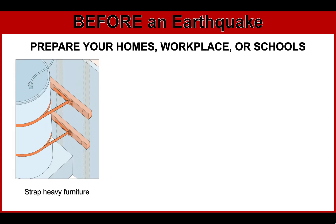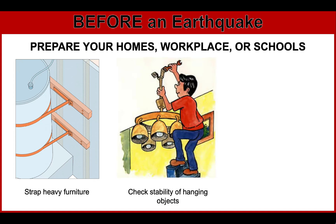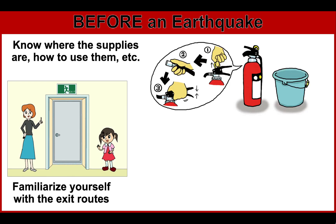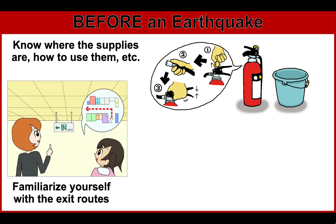Next, you have to prepare your homes, workplace, or schools. Strap or bolt heavy furniture and cabinets to the walls, and check the stability of hanging objects — make sure ceiling fans and chandeliers will not fall. Breakable items, harmful chemicals, and flammable materials should be stored properly on the lowest secured shelves, especially in chemistry laboratories. Familiarize yourself with exit routes, and know where fire extinguishers, first aid kits, alarms, and communication facilities are located — and learn how to use them. Also prepare a handy emergency supply kit with a first aid kit, canned food, can opener, water, clothing, blankets, a battery-operated radio, flashlights, and extra batteries.